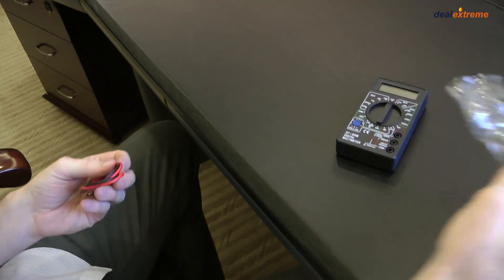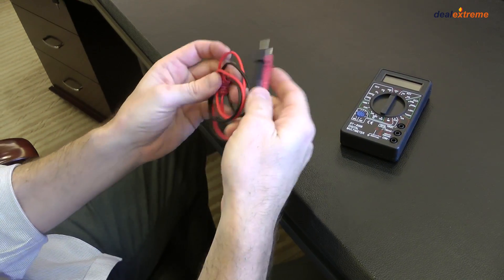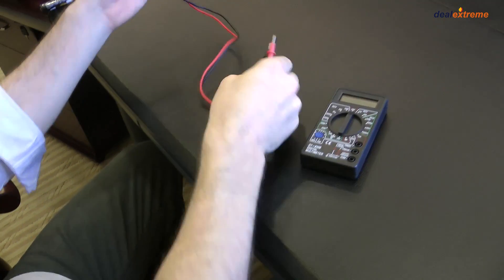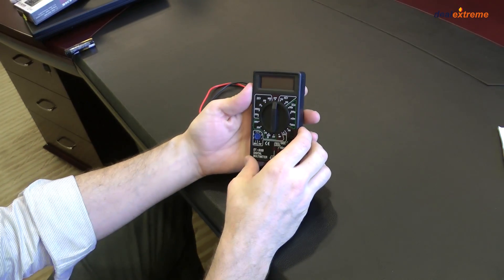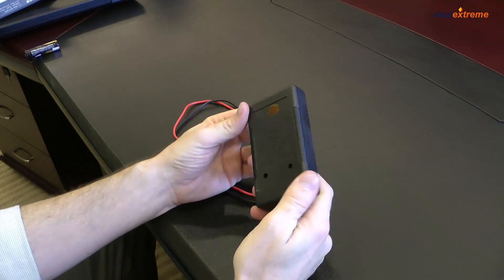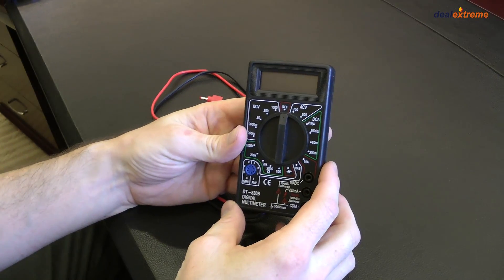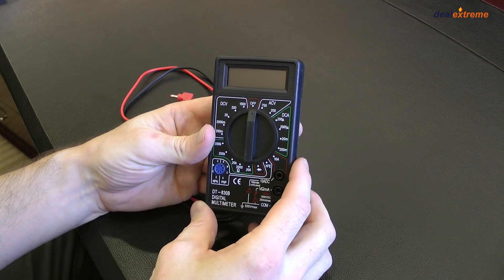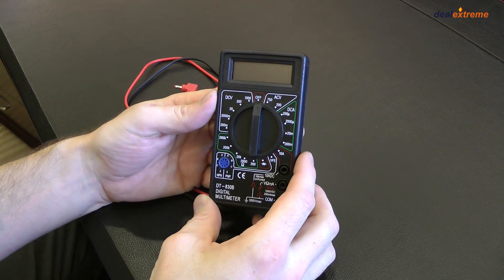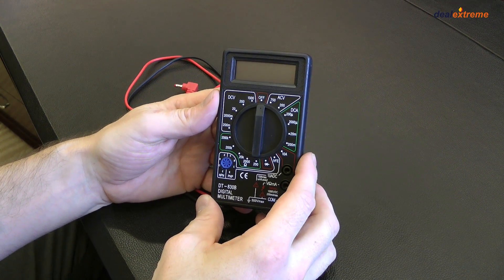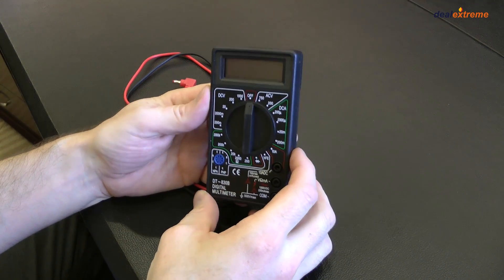We do sell quite a few of these multimeters on the site. This one is nice. It's actually pretty compact, pretty small. You can easily fit it in your front pocket, working on your computer, home electrical wiring, battery testing, flashlights, anything you need to test.